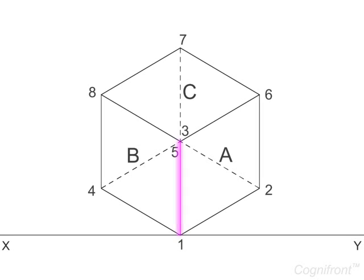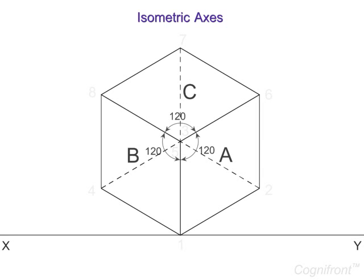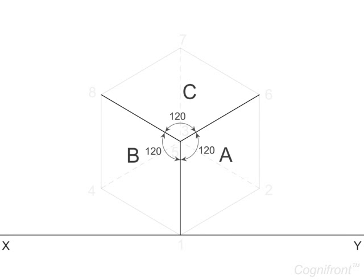The edges 15, 58 and 56 are referred to as isometric axis and make an angle of 120 degrees to each other. These angles are known as axonometric angles.